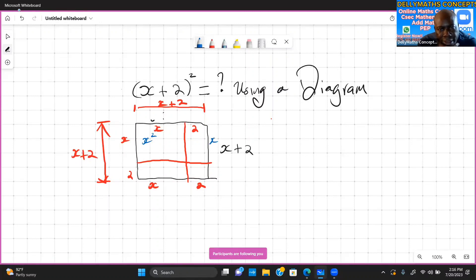So what we have for the area of this piece here is x times 2, which gives us 2x. For this piece, we'll have x times 2, which gives us 2x as well.